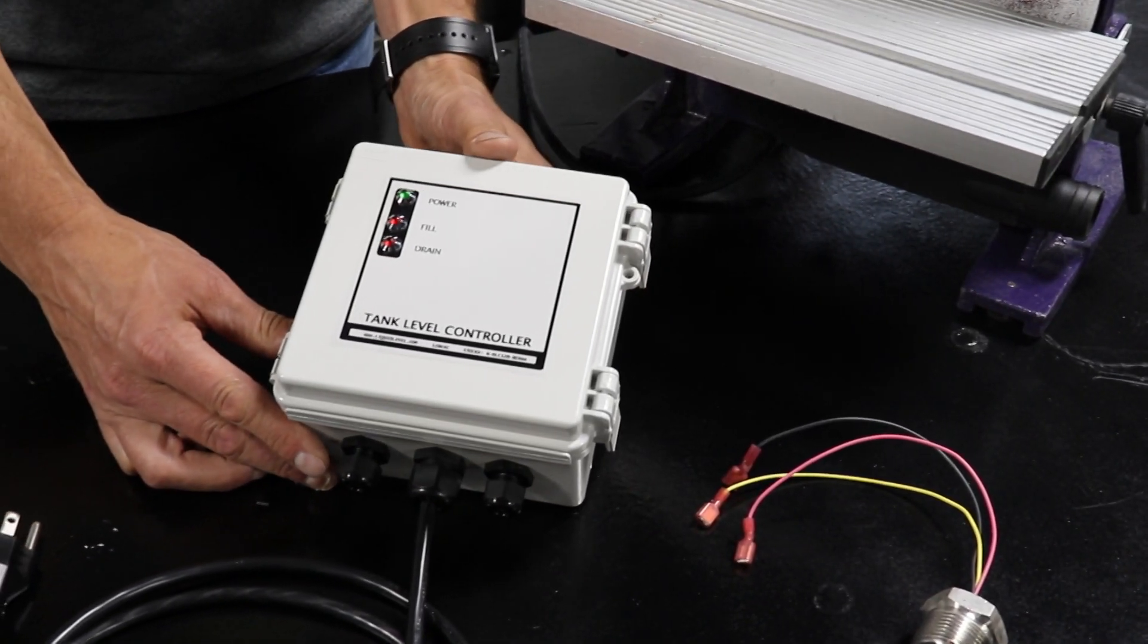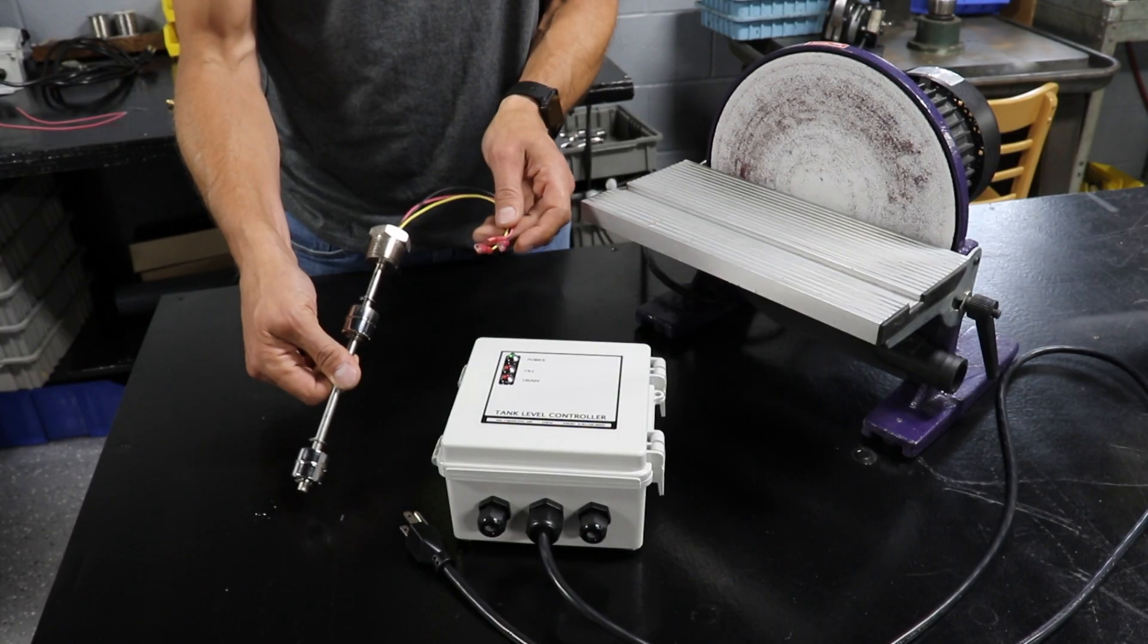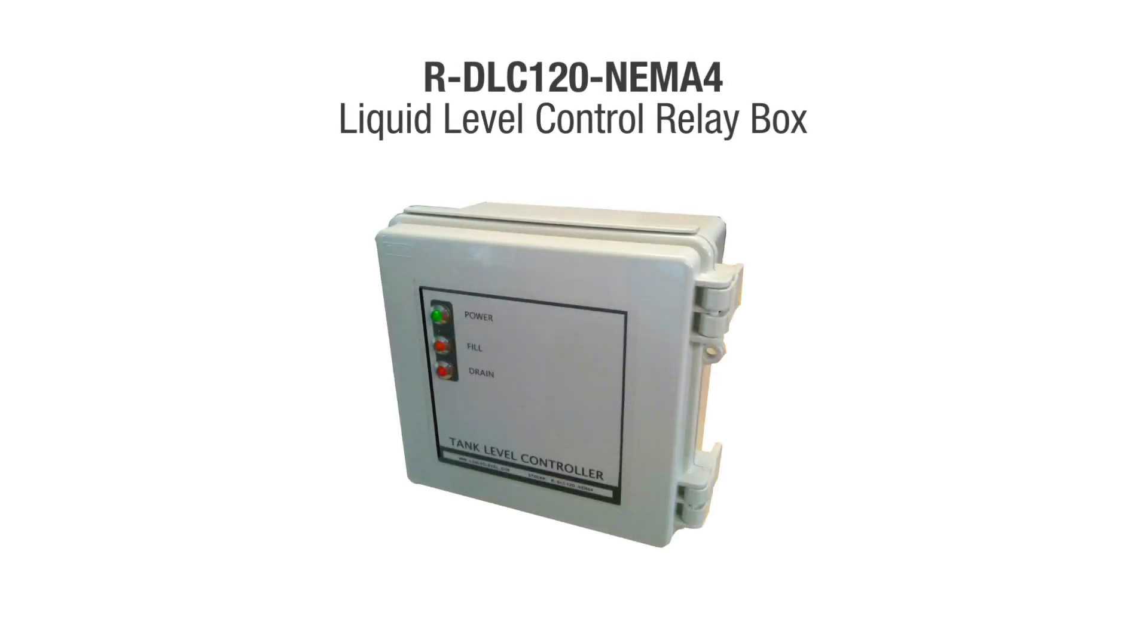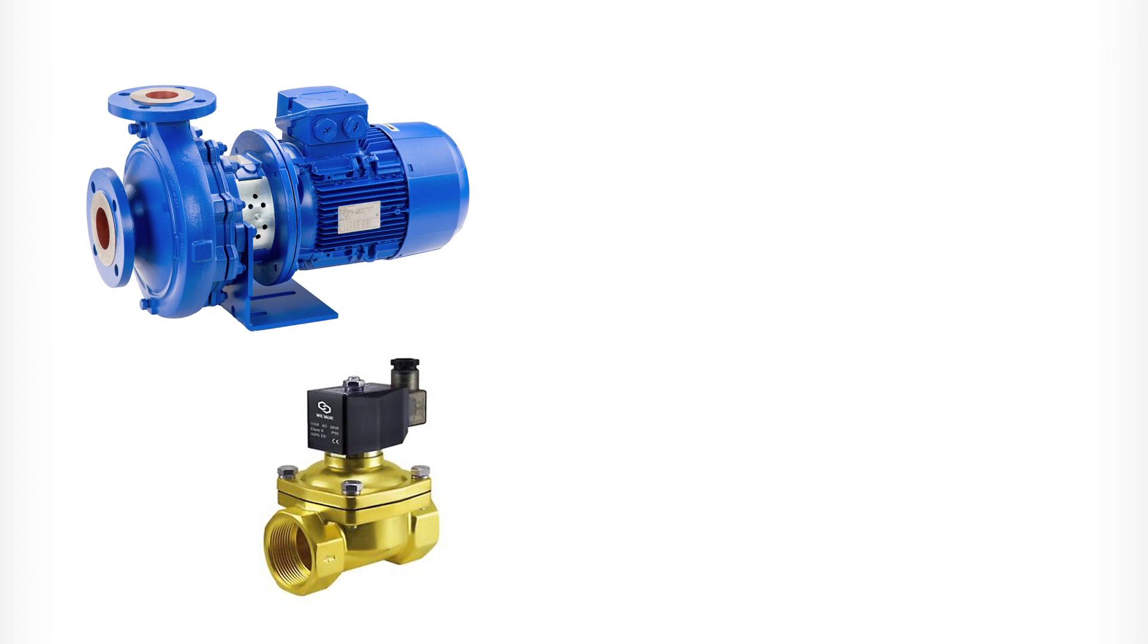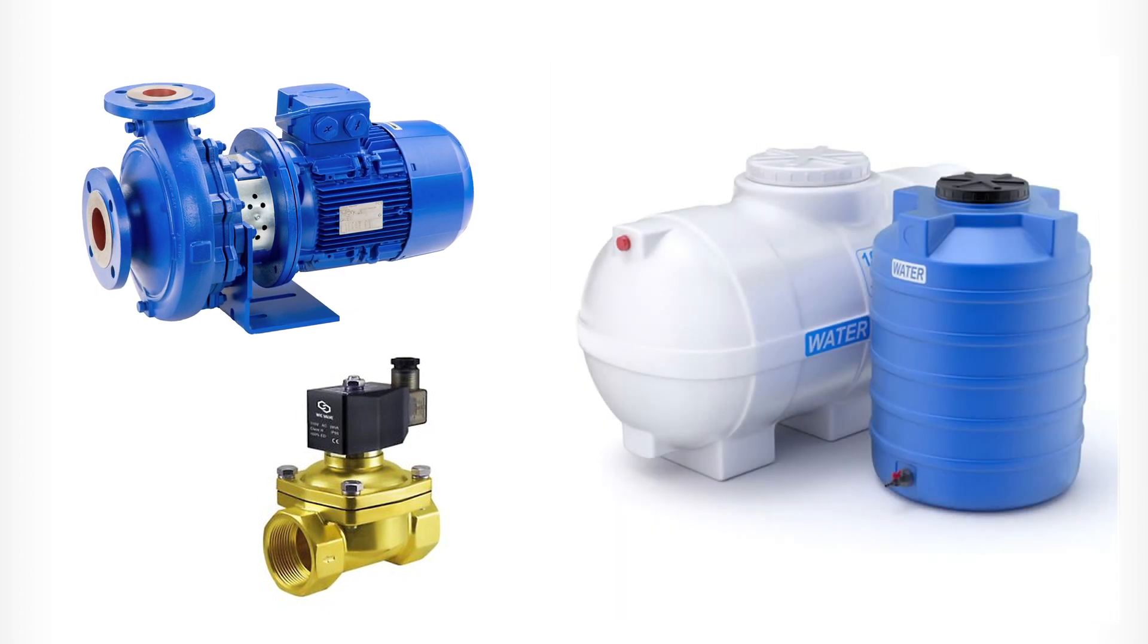In this video I'll demonstrate how to hook up our tank level control relay to a liquid level float switch. This model liquid level control relay box can be used to control pumps or valves to automatically maintain the liquid level in any tank or vessel.